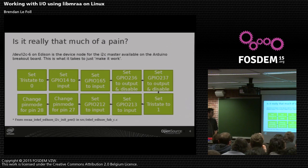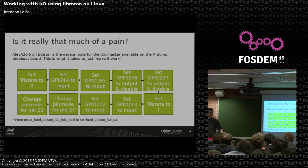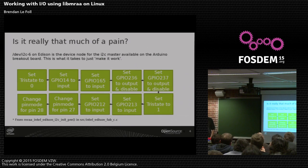So that's just one example — essentially, we do that for you. The idea of libmraa is that the pin numbers written on your board are what you get, and it just works. You do nothing more. If it's written '1' on your board, you ask for pin one and you will get pin one — or at least we will try and make sure that's what you get.